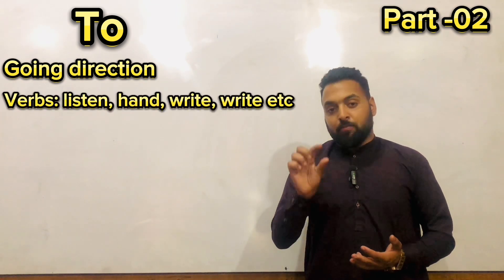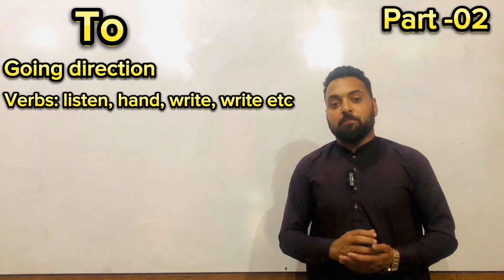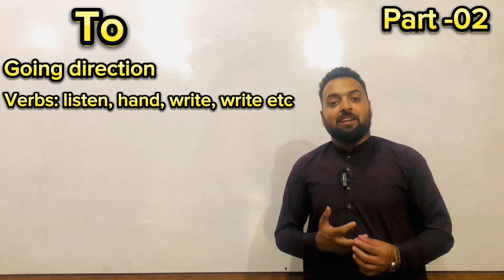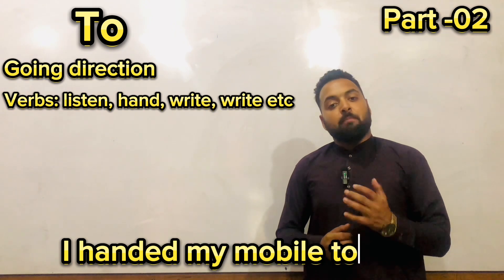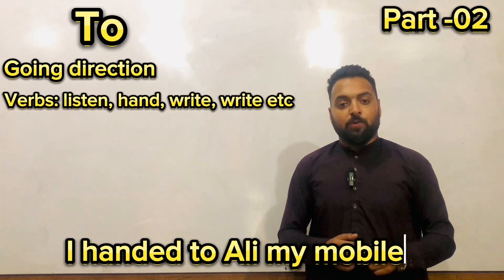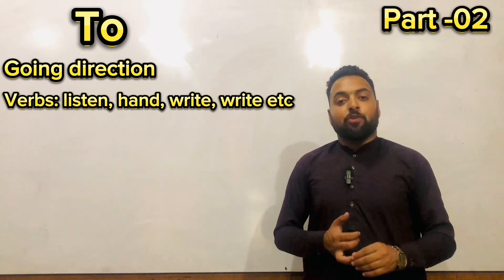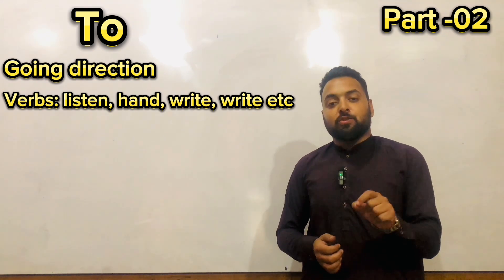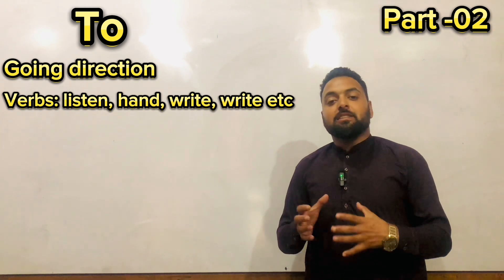Second, there are some words which are verbs like write, listen, hand. For example: I handed my mobile to Ali, or I handed to Ali my mobile phone. I listened to him. I wrote a letter to Ali, or I wrote to Ali a letter. So in these easy verbs, you can also use 'to'.